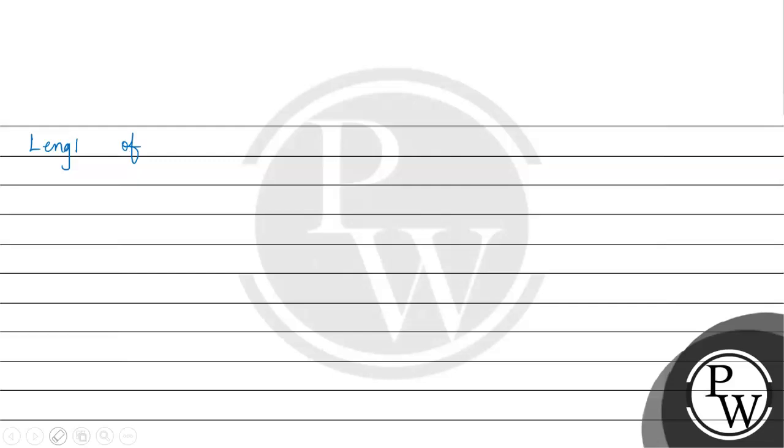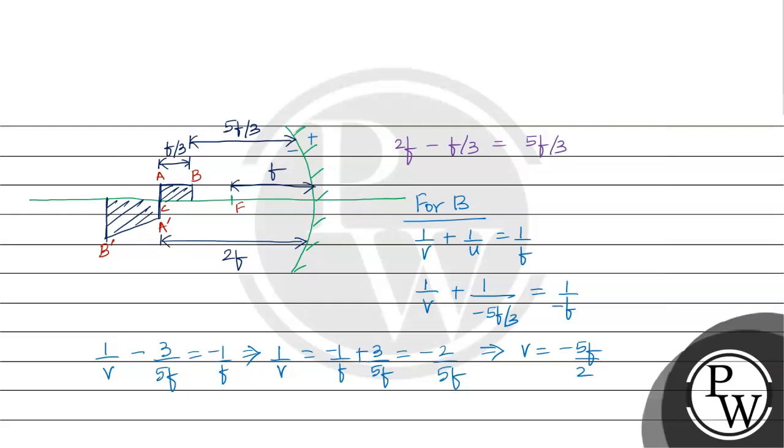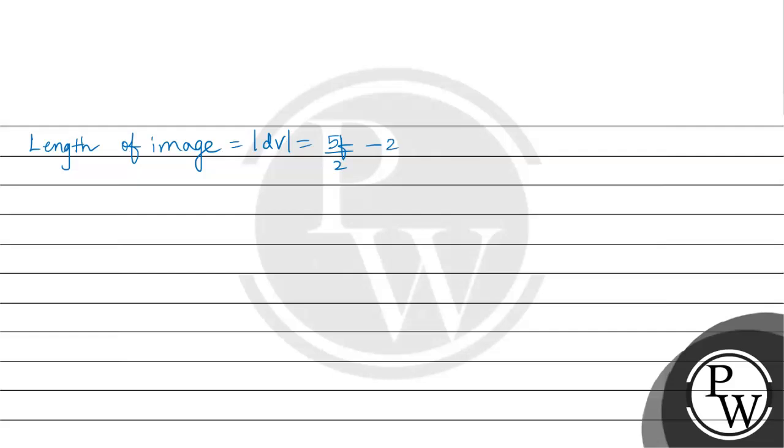Now the length of image—you can assume the length equal to 5F by 2 minus 2F, which gives 0.5F. Now, magnification will be length of image by length of object, that is dv upon du. That is 0.5F by f by 3, which equals 3 by 2. So magnification is 1.5.